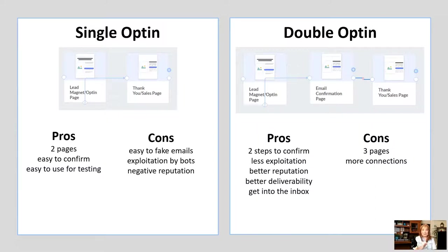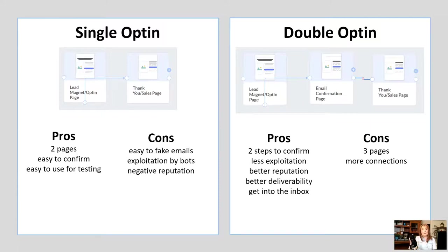You can also end up with a negative reputation. People who use fake emails — that fake email is going to be confirmed on your email list. When you go to send out emails, that email is going to fail. Other email servers are tracking that kind of stuff, and if you have a bunch of failed or undeliverable emails, your reputation for your email is going to go down. As your reputation goes down, you're going to end up in the spam box in email clients like Gmail or Hotmail.